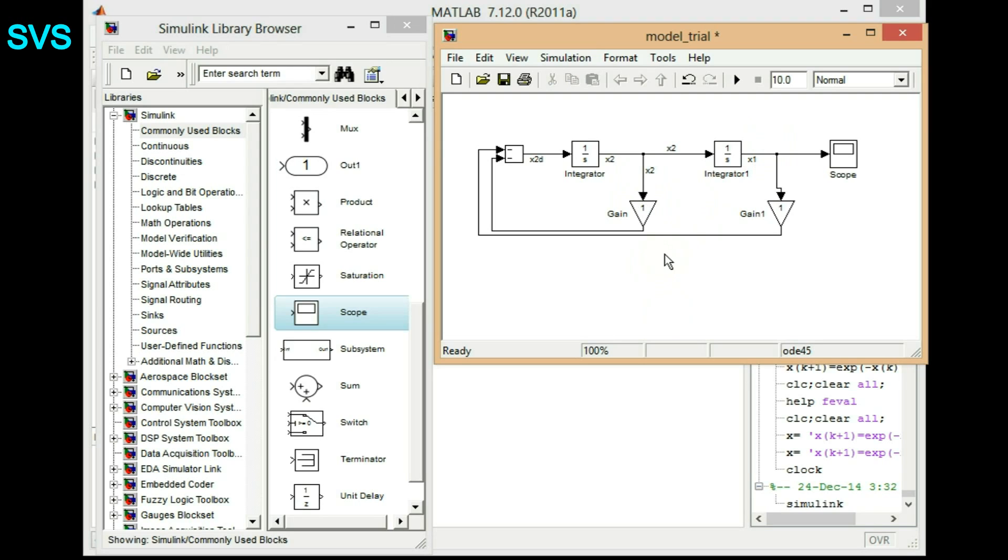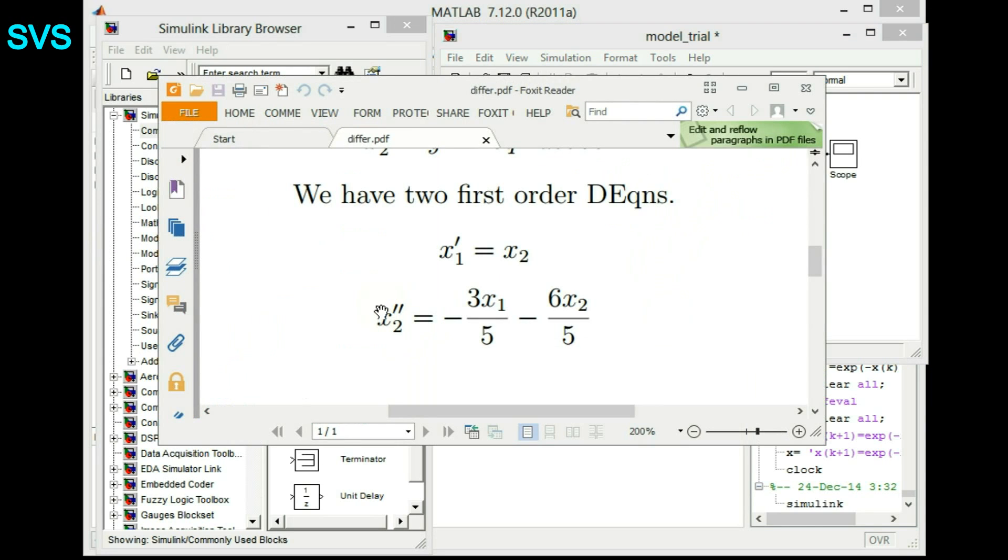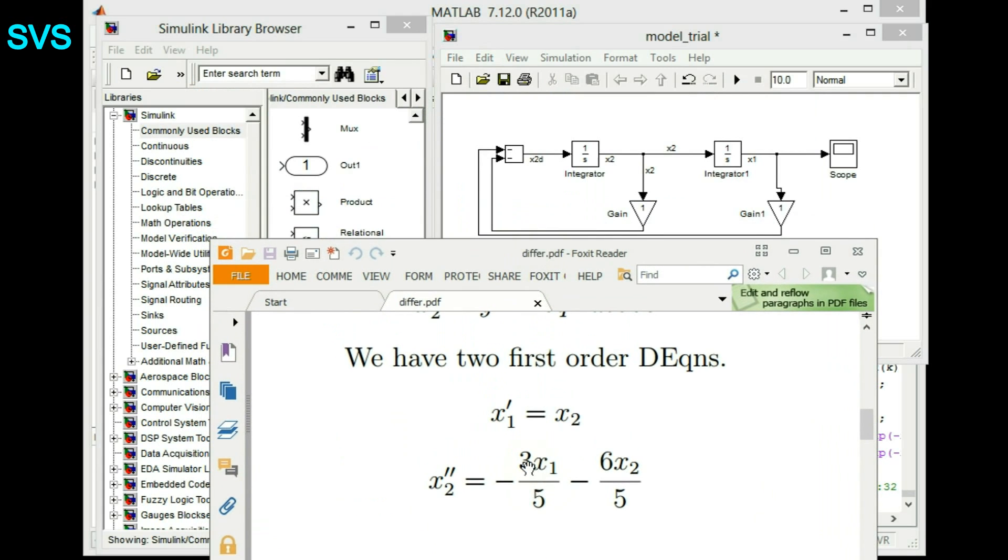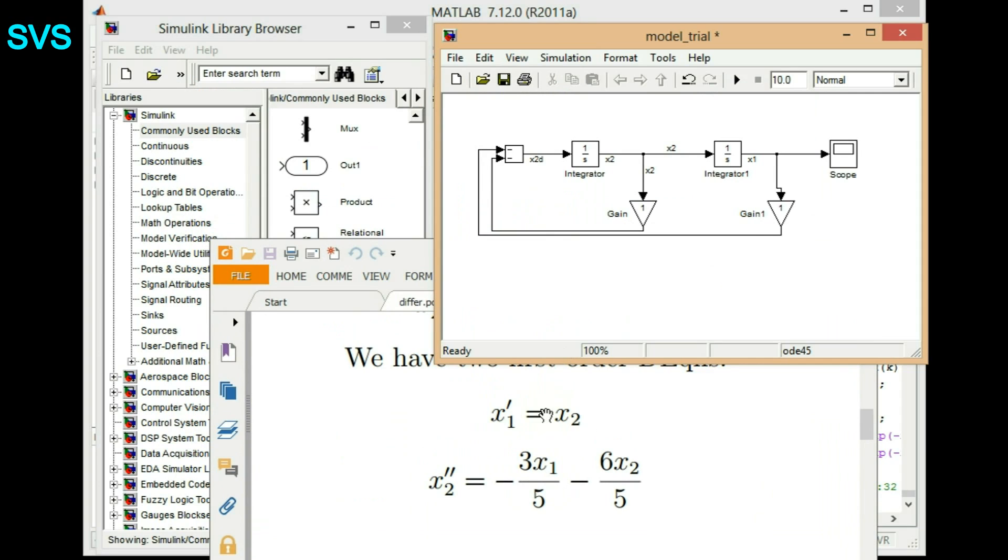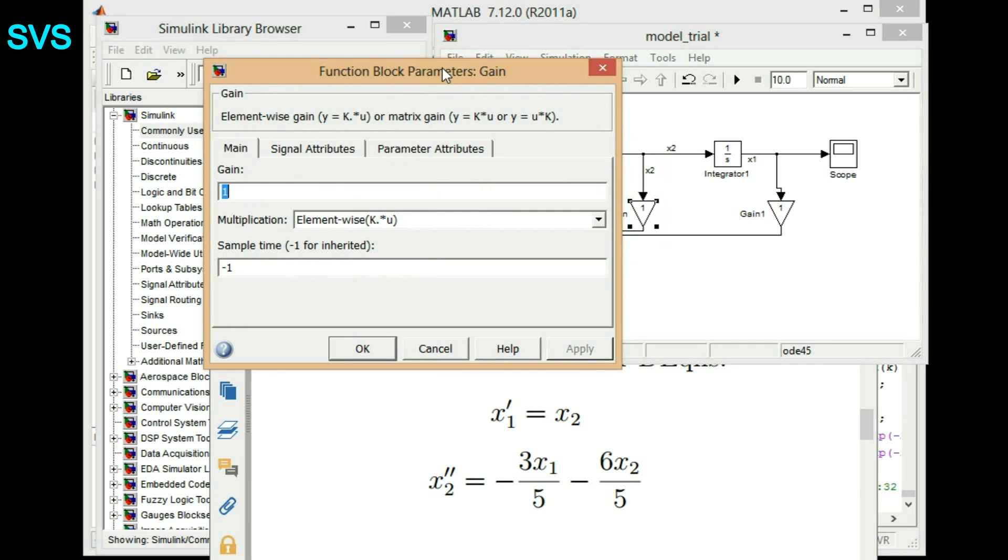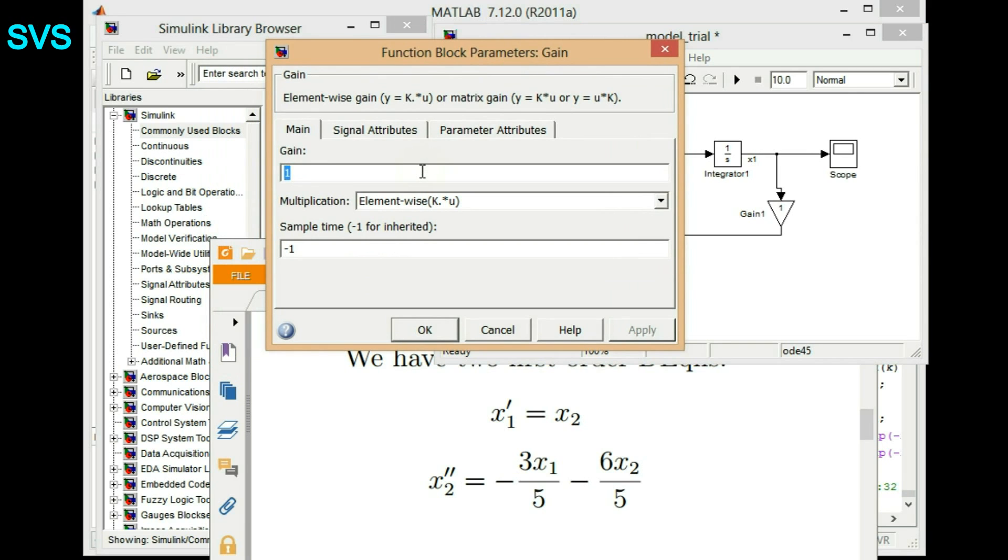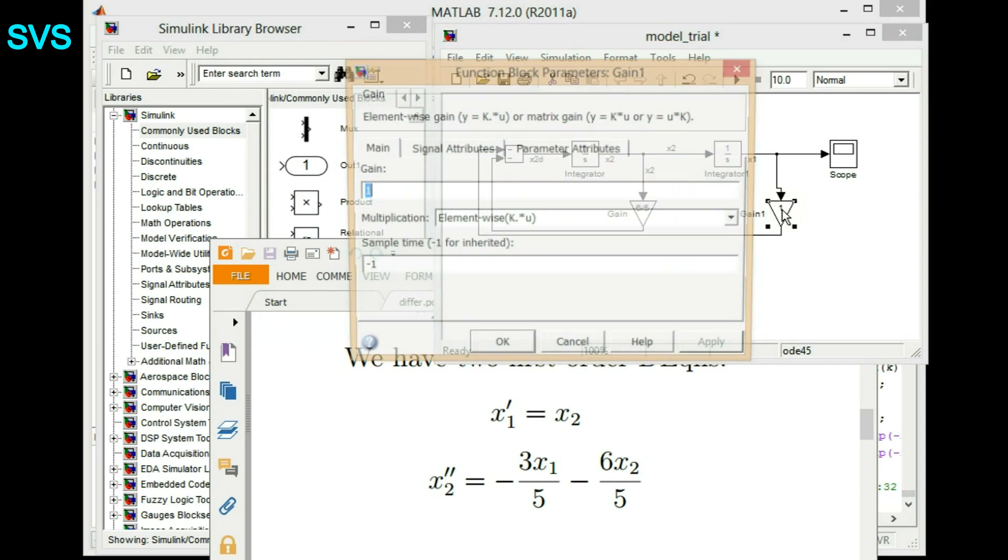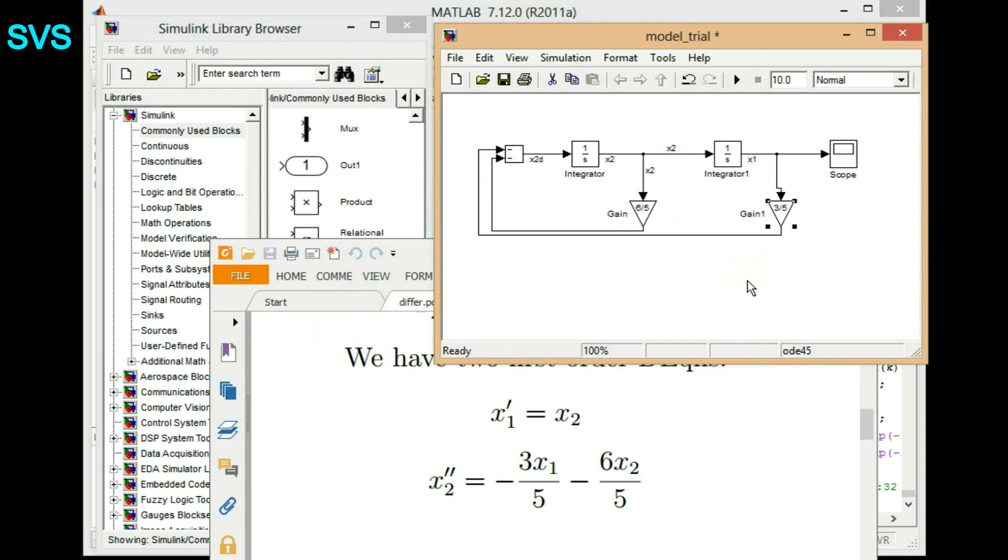And when you double click on the connecting links it will directly pop up and this value we know the coefficient. Let's revisit that equation again. So with x1 we have coefficient 3 by 5 and with x2 we have 6 by 5. We'll double click that gain block and we'll adjust it to 6 by 5 there. So we'll write that function 6 by 5 and same goes with this as well like 3 by 5. There we go.